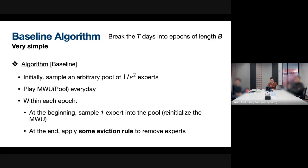Here's the more formal description of the baseline algorithm. I break all T days into epochs of length B. The algorithm updates the pool epoch by epoch, and within every epoch the pool is unchanged. Initially, we sample an arbitrary pool of 1/epsilon² experts corresponding to our memory constraint. Throughout every day, we just run multiplicative weights on this pool. At the beginning of every epoch, I sample one random expert into the pool and reinitialize multiplicative weights from a uniform distribution over the current pool. At the end of an epoch, if the pool exceeds the memory constraint, I apply an eviction rule.